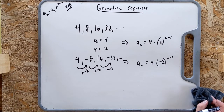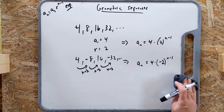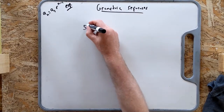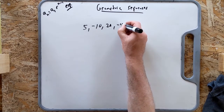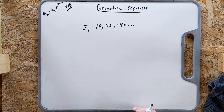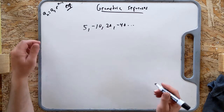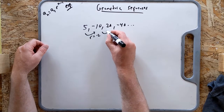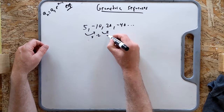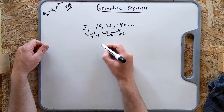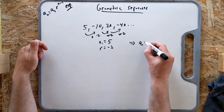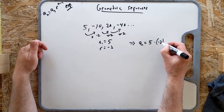Practice problem: given the sequence 5, -10, 20, -40, dot dot dot, write the explicit formula. Pause the video and do that. The common ratio r is negative 2: multiply by -2 each time. And a_1 is 5. So the explicit formula is a_n equals 5 times (-2) to the n minus 1.